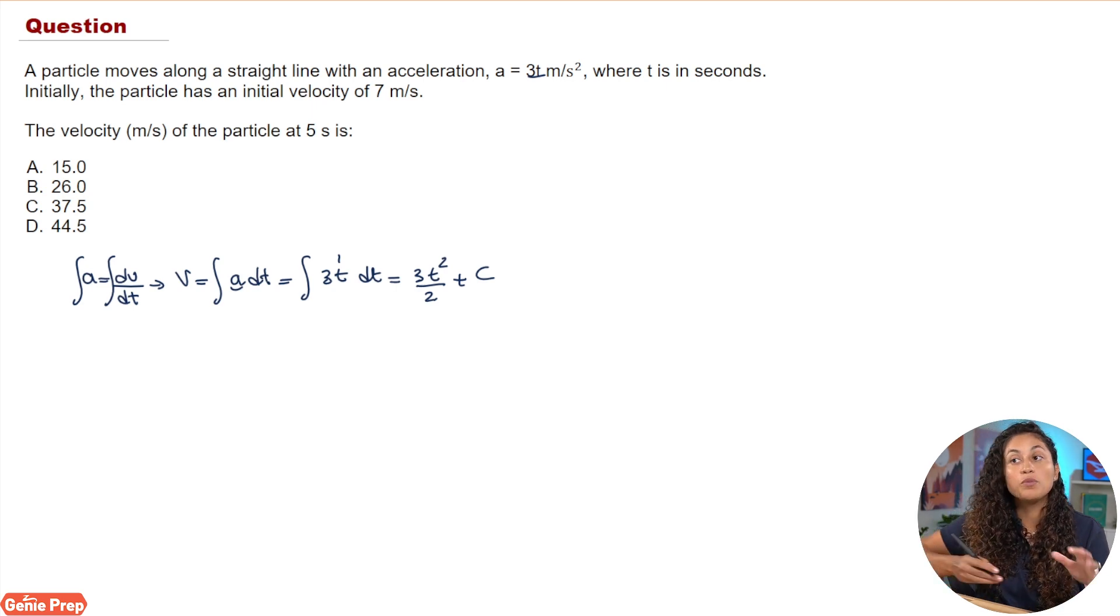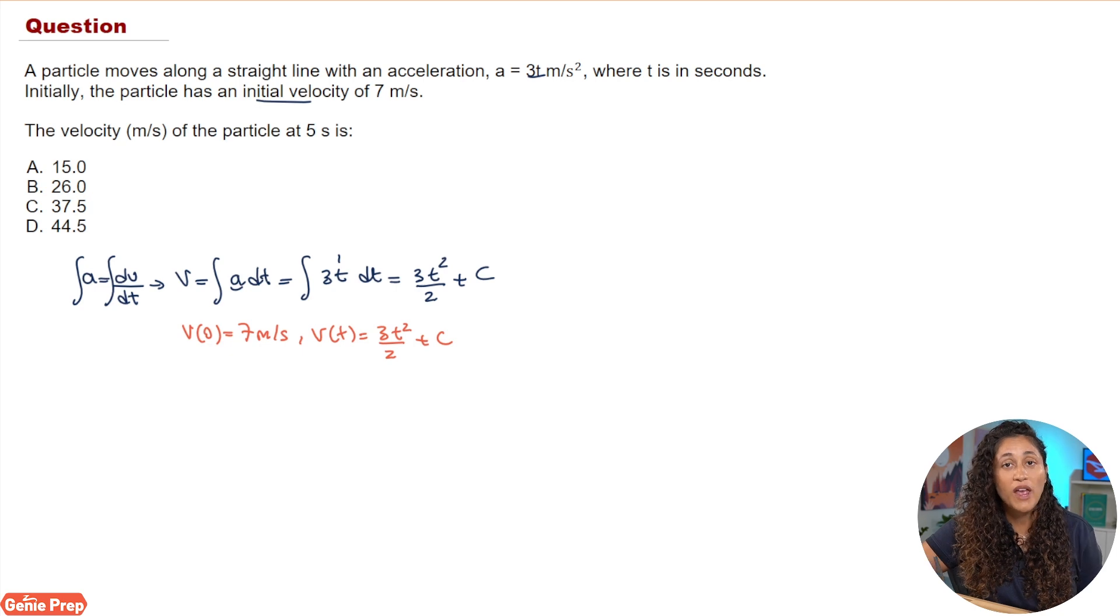Now before we can find the velocity at 5 seconds, first we actually have to determine the constant. The way we're going to determine the constant is, in the problem initially we have the initial velocity. That means at t equals zero, the initial velocity is 7 meters per second, so we can actually use that to determine C. So this is what we have so far: v of 0 equals 7 because initially the velocity is 7, and we found that v of t equals 3t squared over 2 plus C.